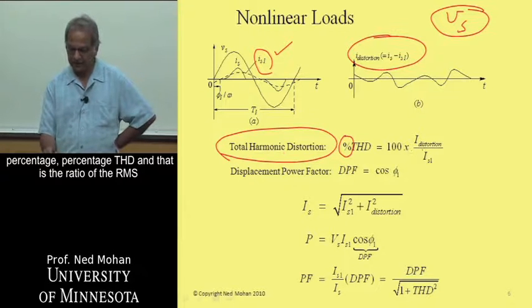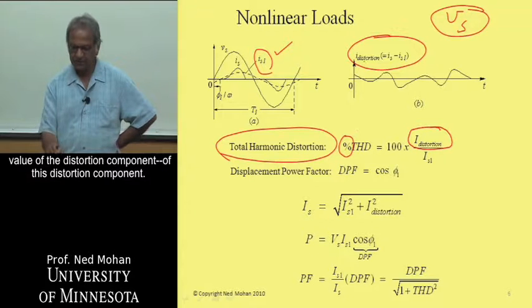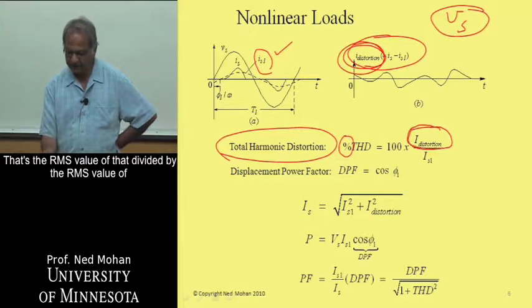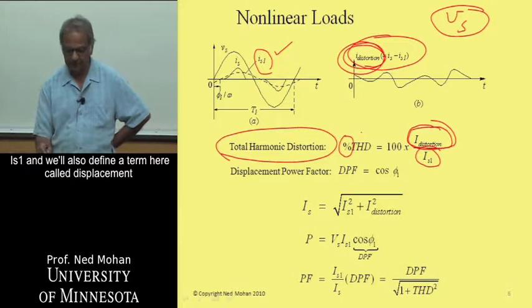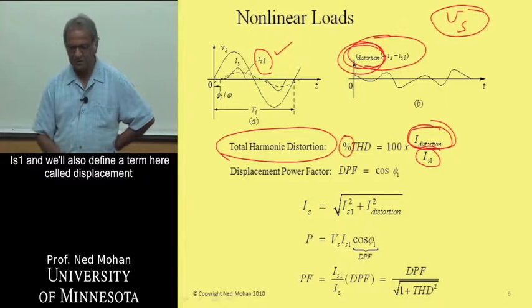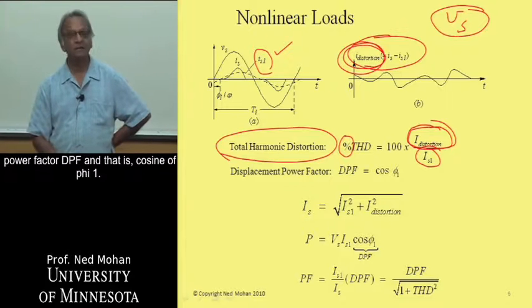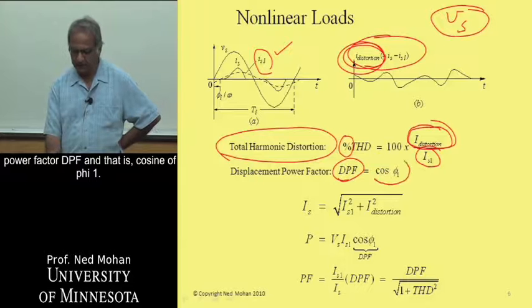And that is the ratio of the RMS value of the distortion component, of this distortion component—the RMS value of that divided by the RMS value of the fundamental frequency component, IS1. And we will also define a term here called displacement power factor, DPF, and that is cosine of phi1.